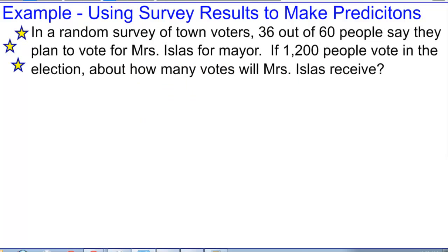Now this is an example of using experimental probability to make predictions. So here is a survey that we have taken. We randomly surveyed town voters and 36 out of 60 people said that they plan to vote for Miss Islas for mayor. If there are 1,200 people that vote in the election, about how many votes will Mrs. Islas receive? So we are going to use the experimental result that we got, that 36 out of the 60 people we asked said that they would vote for her, and use that to make a prediction. Now because those people were randomly chosen, we can use this as a sample of the town. And again, we're just going to set up a proportion.